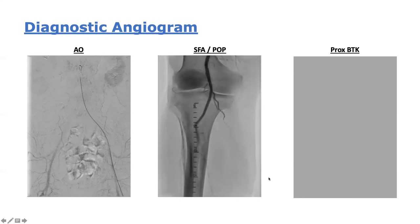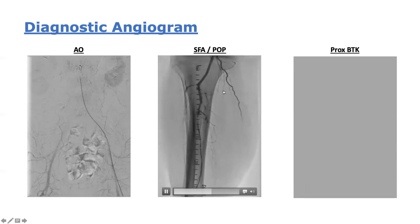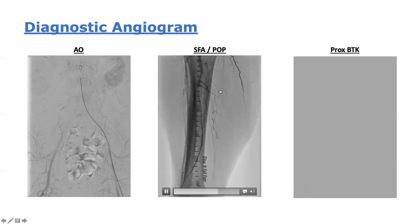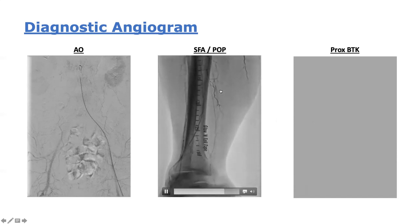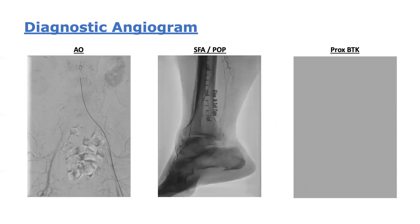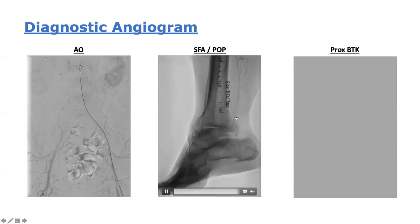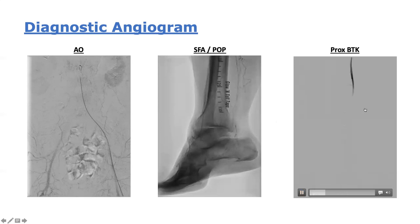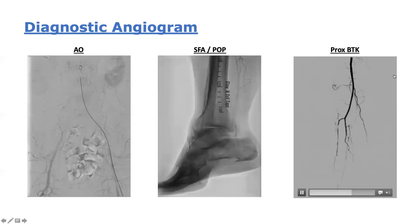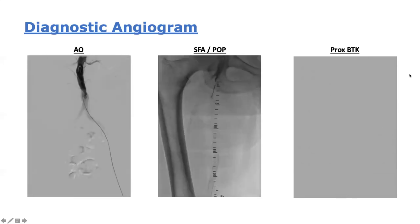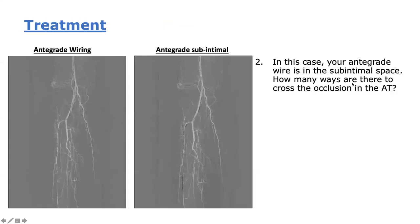There was triple vessel infrapopliteal occlusive disease: an anterior tibial artery occlusion after severe ostial stenosis with heavy calcifications, reconstituting from collateral flow from the peroneal artery, which is itself chronically occluded and reconstitutes through bridging collaterals from the tibial-peroneal trunk, which was patent. The posterior tibial artery was also chronically occluded in this case — a very frequent everyday practice scenario.